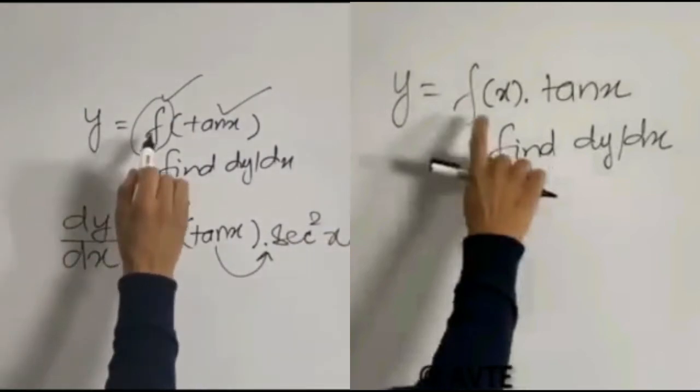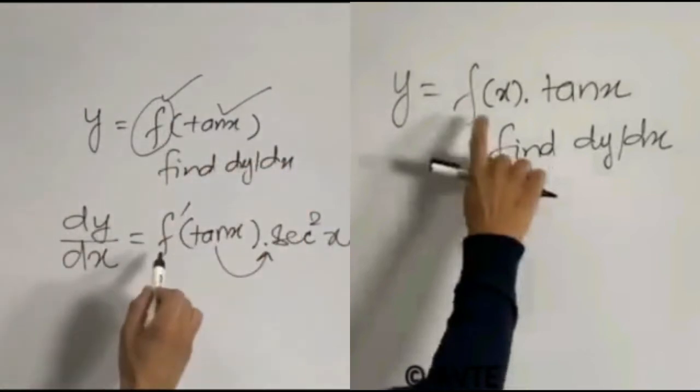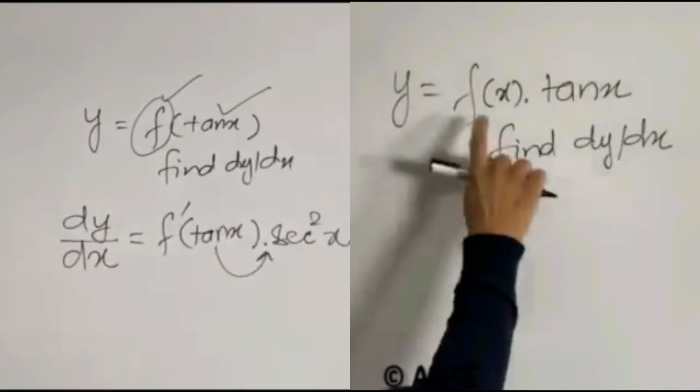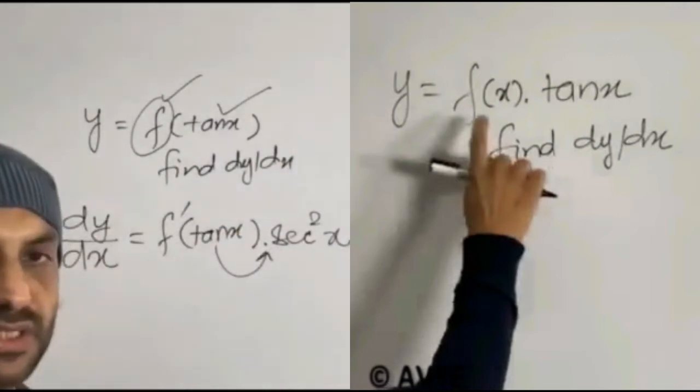So if y is f of tan x, then derivative is f dash tan x into the derivative of tan x which is secant square x.